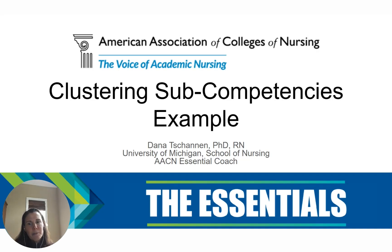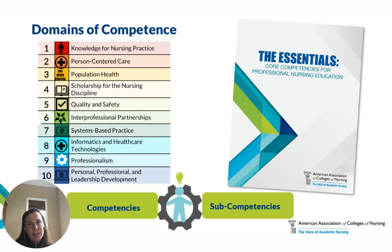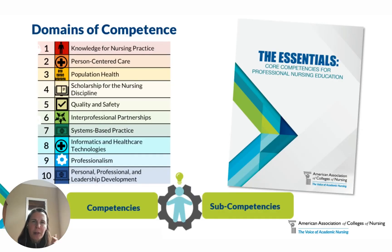It's important to remember that the work of essentializing the curriculum and transitioning to CBE really begins at the program level. Faculty and leadership must first align program outcomes with the AACN Essentials domains and collectively identify those progression indicators, which are the observable behaviors that show progression to and attainment of each of the sub-competencies.